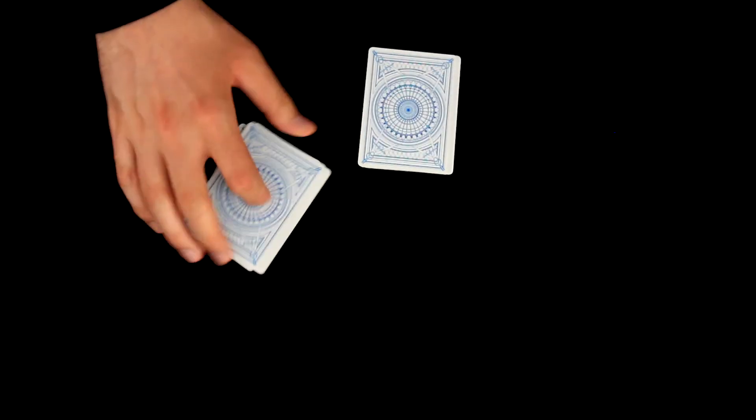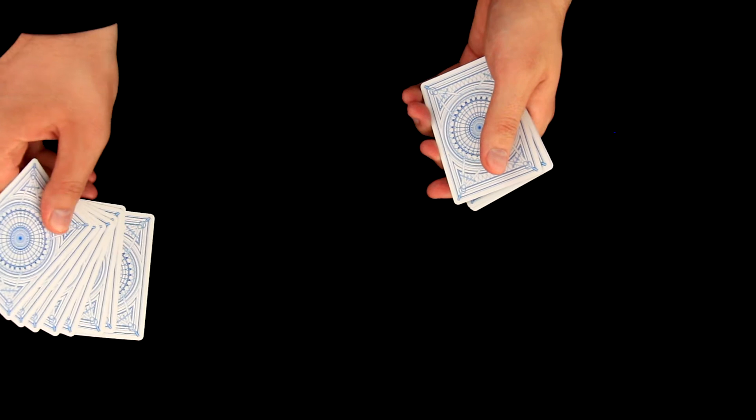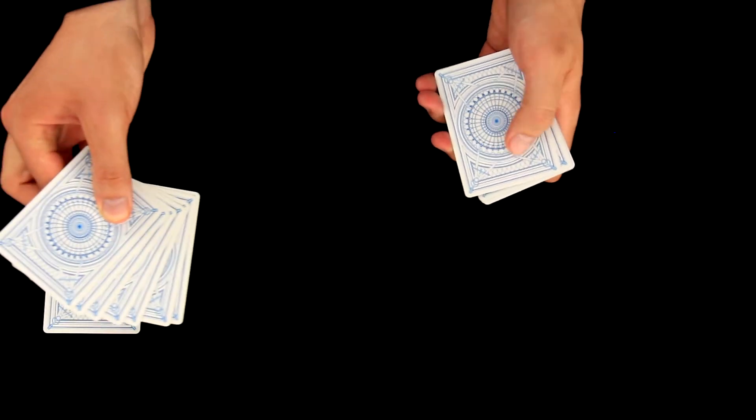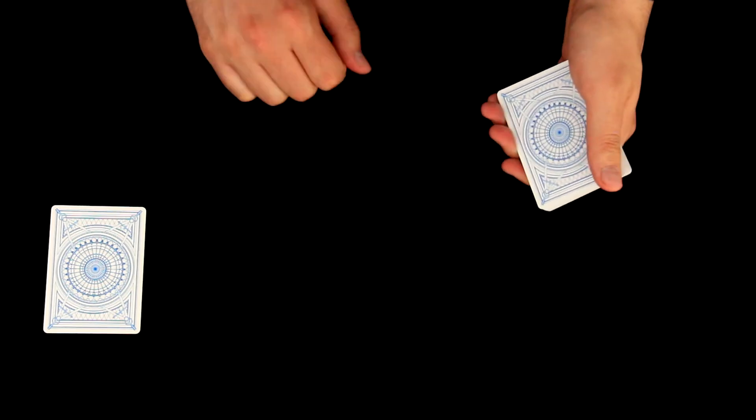Or spectator can cut it as well. We will now ask him to choose any card. Let's say he will like this card over here. We will place it on a table like this and now we need to place these cards on the bottom like this. And now everything is done.